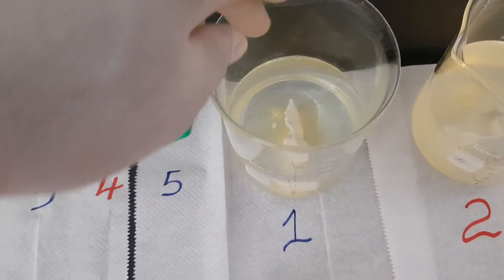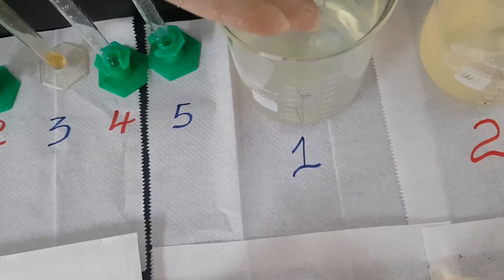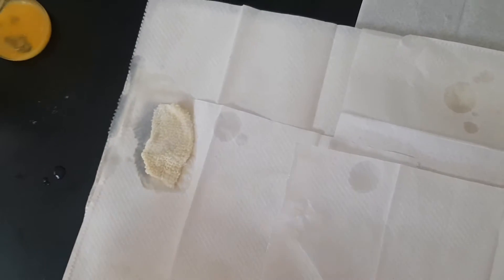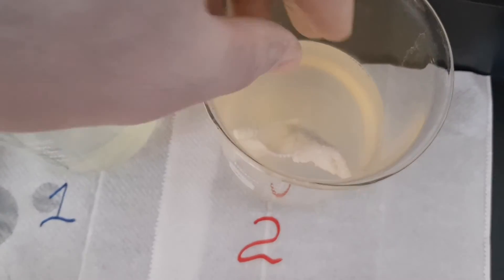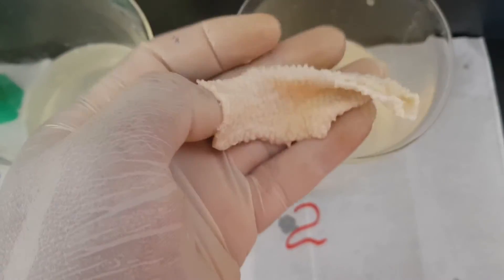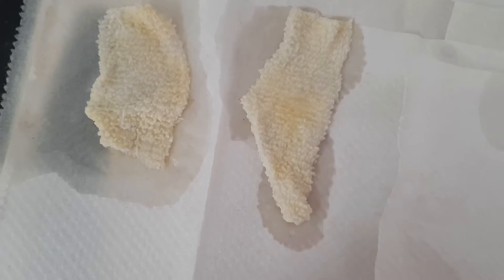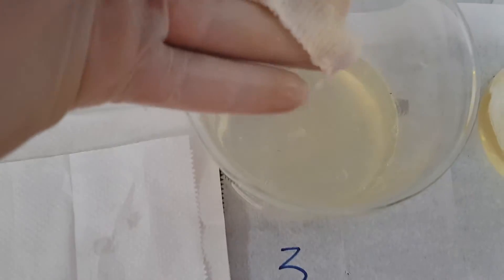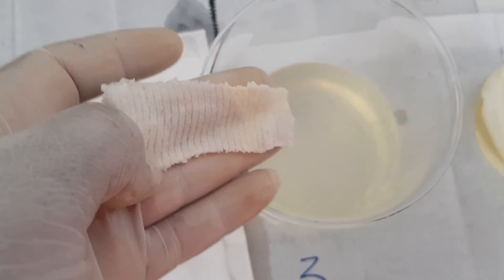We're going to take them out in order, so this is the first, this is number one. I'm going to look at it carefully. You could see the egg is still there. For number two, let's look at this carefully. There's a slight amount of egg still there. Let's go to number three. Look, not much egg is left on this one.